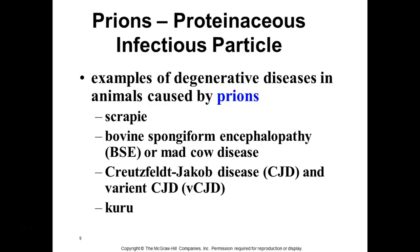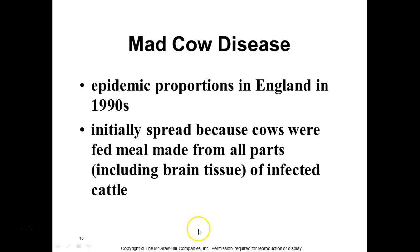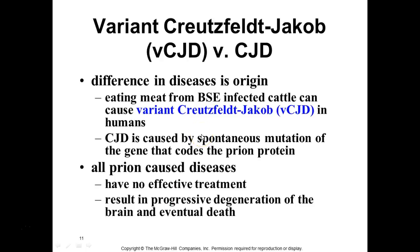Other prion diseases include scrapie in goats or sheep. Kuru is another one that occurs in people, usually where they're eating their ancestors. Creutzfeldt-Jakob disease is pretty much the human form of mad cow disease, and the same thing could happen — if you eat somebody who has it, you will get it. How it originally arises is believed to be through a spontaneous mutation in the DNA.